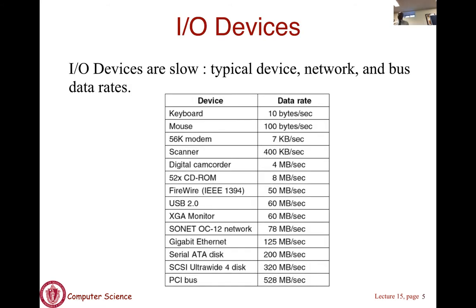There are many kinds of IO devices on a typical machine, ranging from keyboard and mouse to graphics cards and network interface cards. All IO devices are typically slow, but the speeds can vary dramatically by orders of magnitude. For example, a keyboard might receive as few as 10 bytes per second depending on how fast you type, whereas a gigabit Ethernet card can transfer up to 125 megabytes per second. Despite the vast differences in speeds, they are still slower than the processor and memory on your machine.